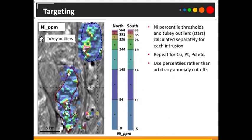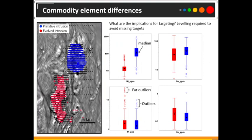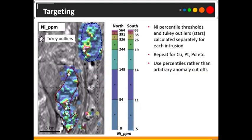If we don't do some levelling and we just look at percentiles for nickel overall, we're going to entirely miss that southern intrusion — which is not smart, because nickel doesn't only occur in ultramafics. There are many examples where it occurs in troctolites and less primitive rocks. So we had to level. There are multiple ways of levelling; in this example, all I did was calculate percentiles separately for each intrusion, to get rid of that changing background level of nickel and see through the olivine to look for anomalies. The 90th percentile for the northern intrusion was 326 ppm nickel, whereas the southern was only 26 ppm — so I'm effectively levelling those two populations.